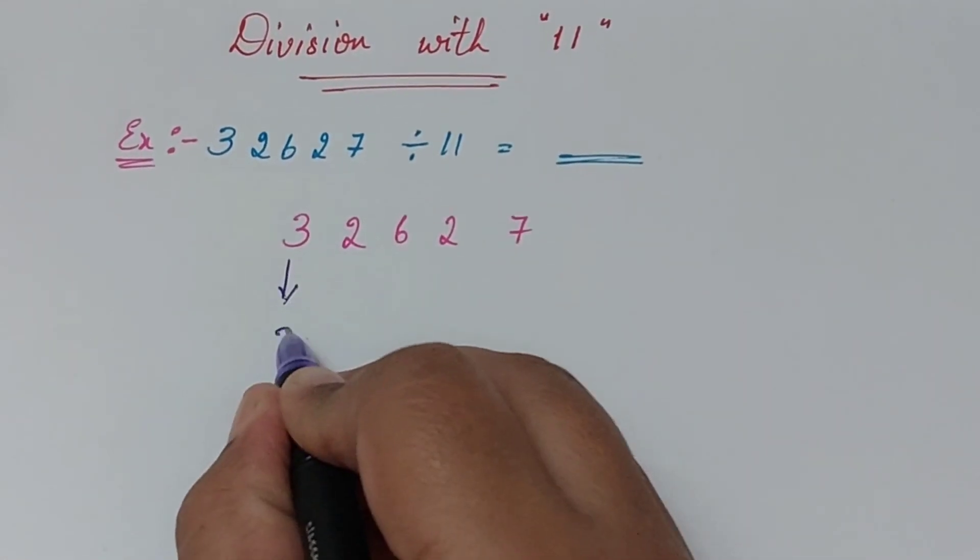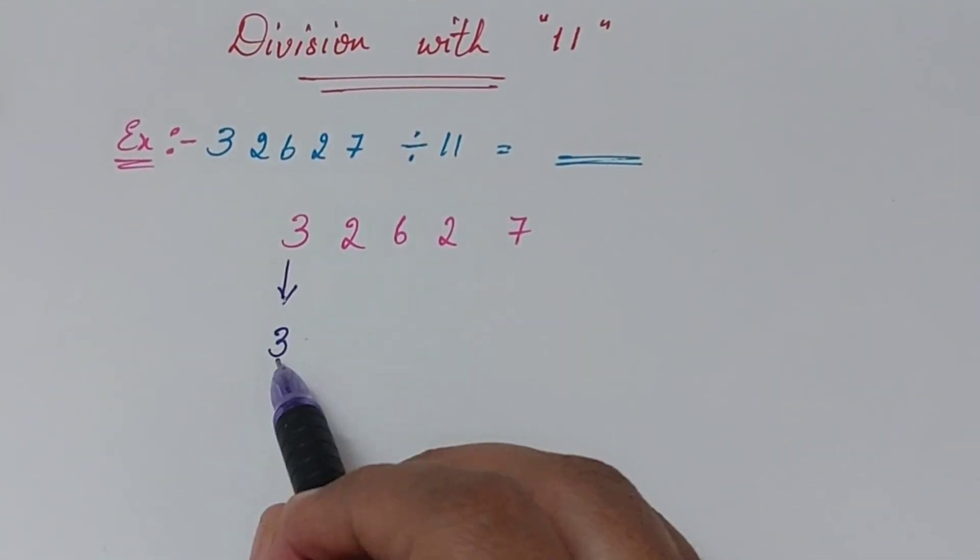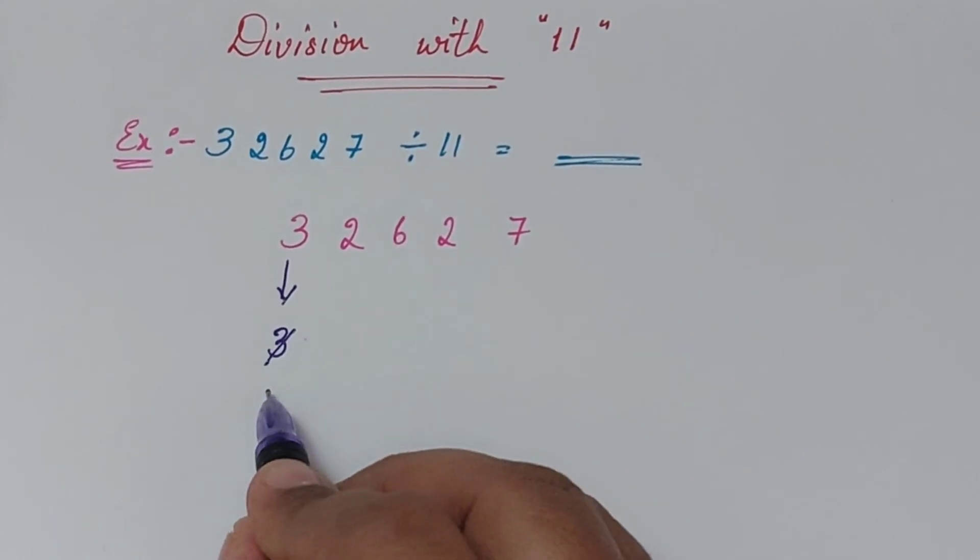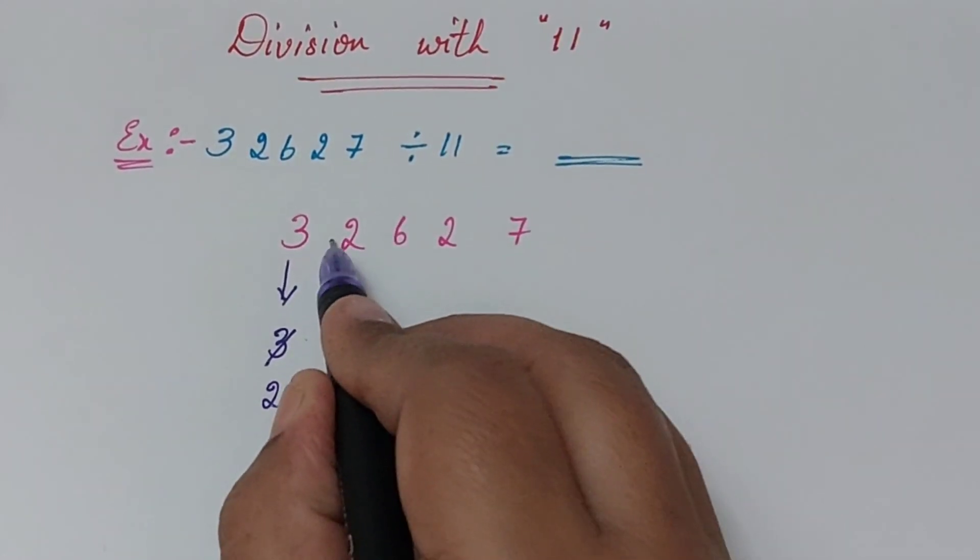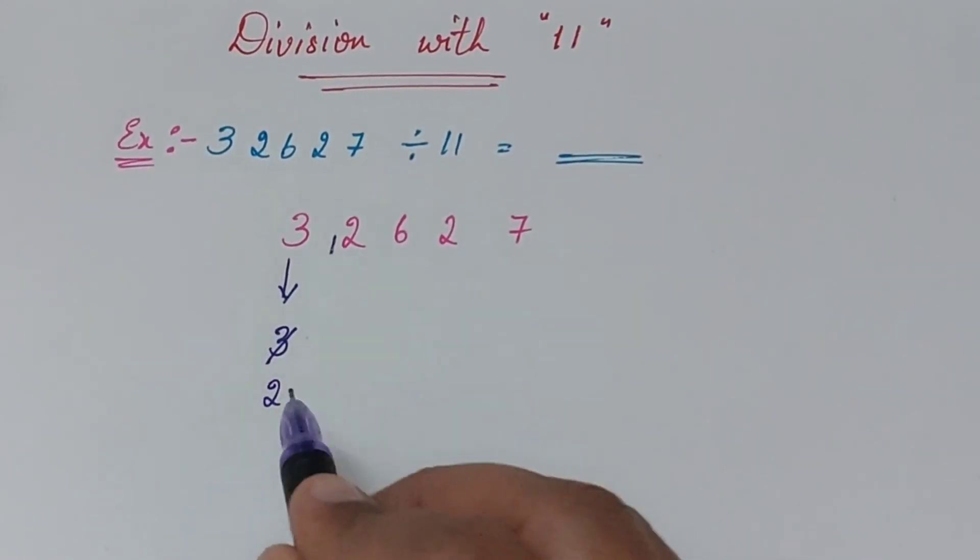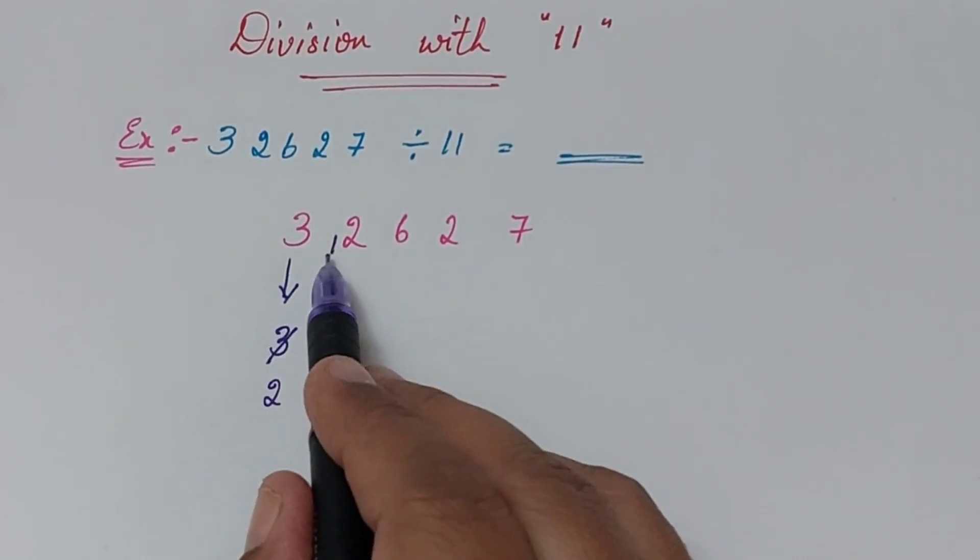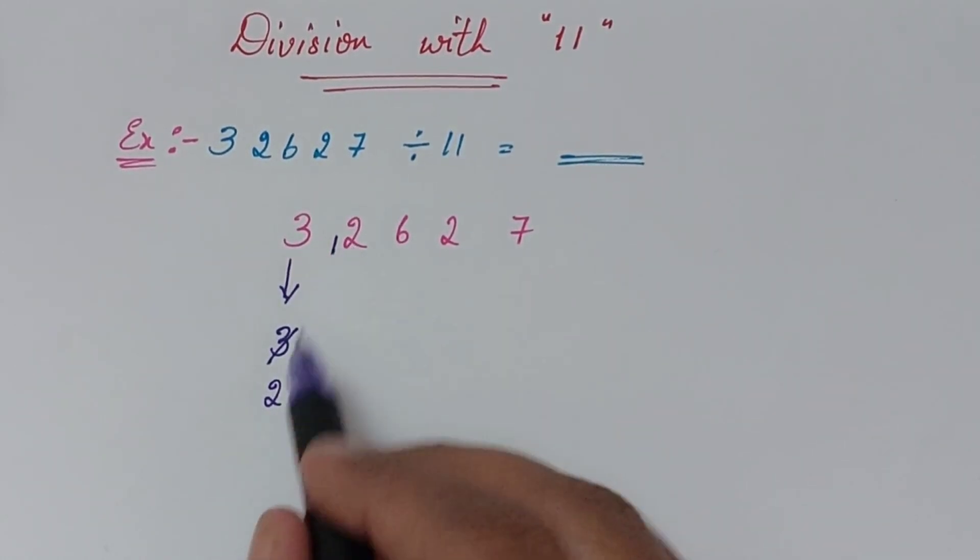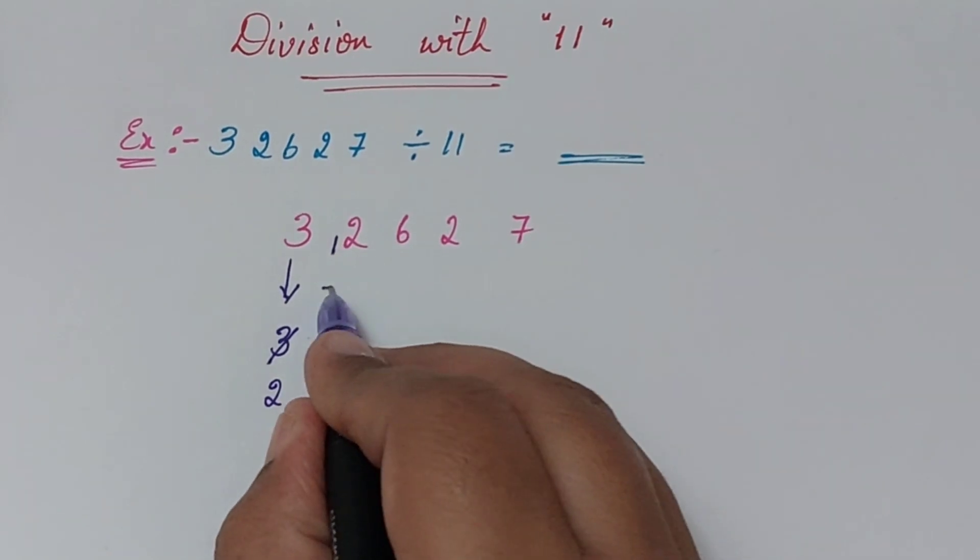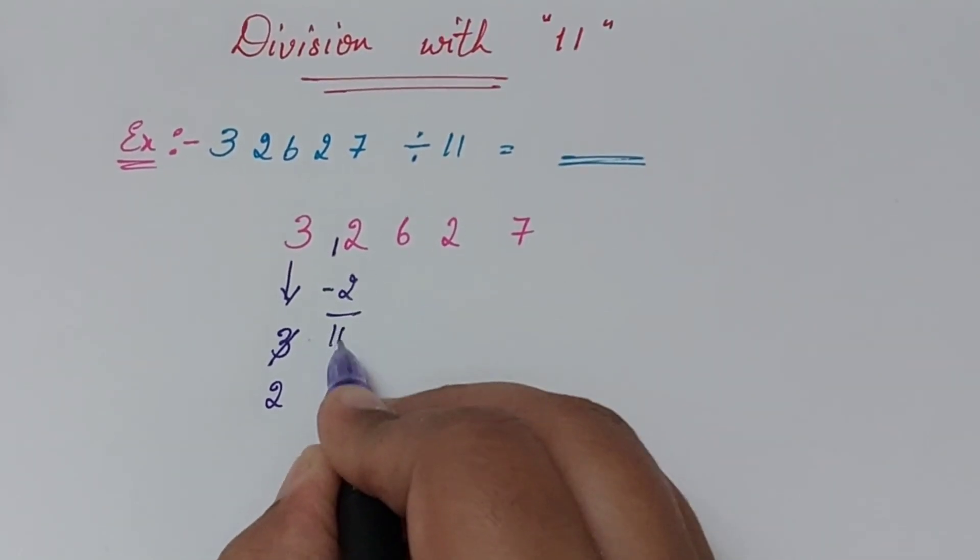Drag 3 as it is. Can we do 2 minus 3? No. Reduce this to 2. Whatever you reduce, it will be 1 will be added here. That means one time you have reduced, it became 12. Can we do 12 minus 2? Of course we can do. So 12 minus 2 is 10 for us.